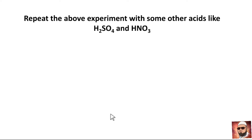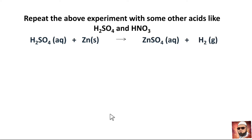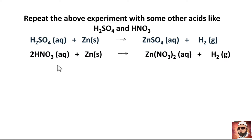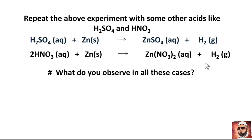Repeat the above activity with other acids like sulfuric acid (H₂SO₄) and nitric acid (HNO₃). When sulfuric acid reacts with zinc metal, zinc sulfate plus hydrogen gas is formed. Similarly, when nitric acid reacts with zinc metal, zinc nitrate plus hydrogen gas is released.